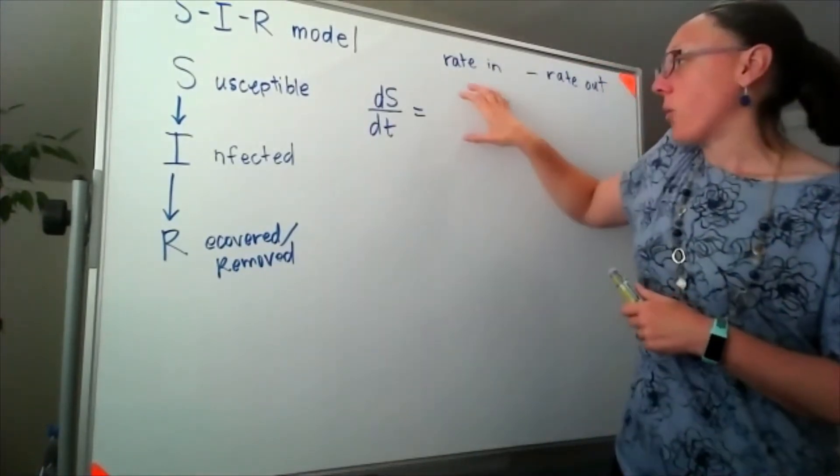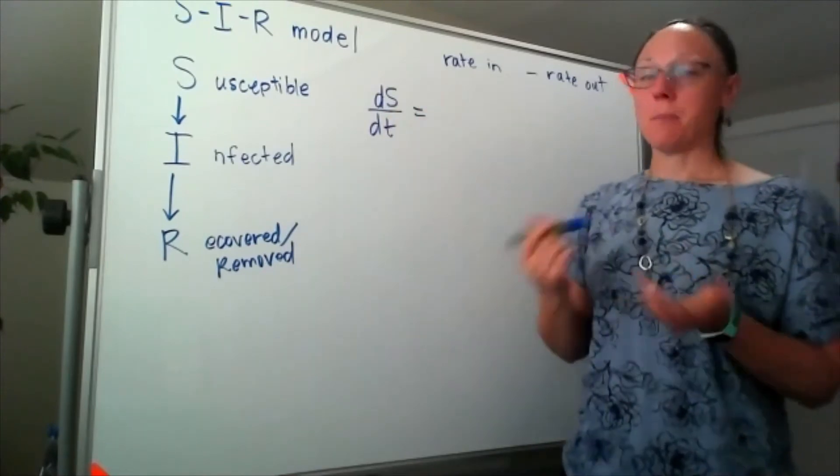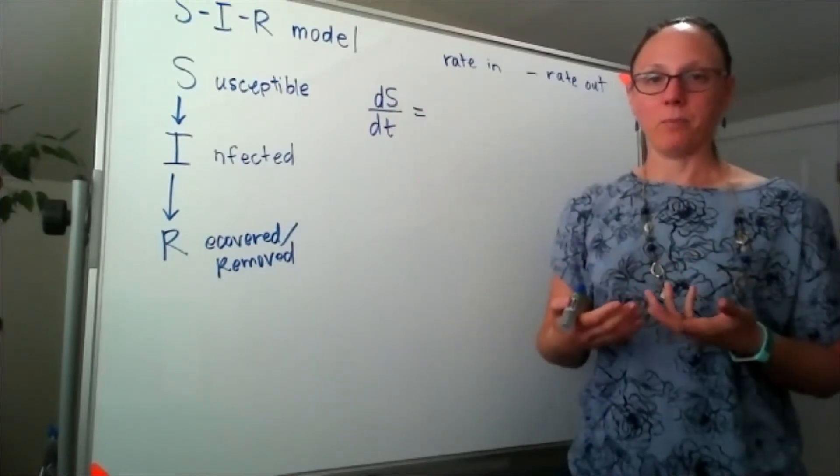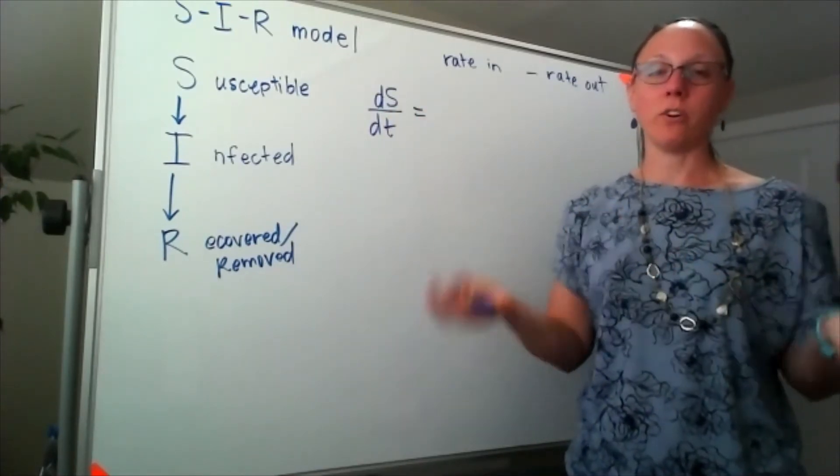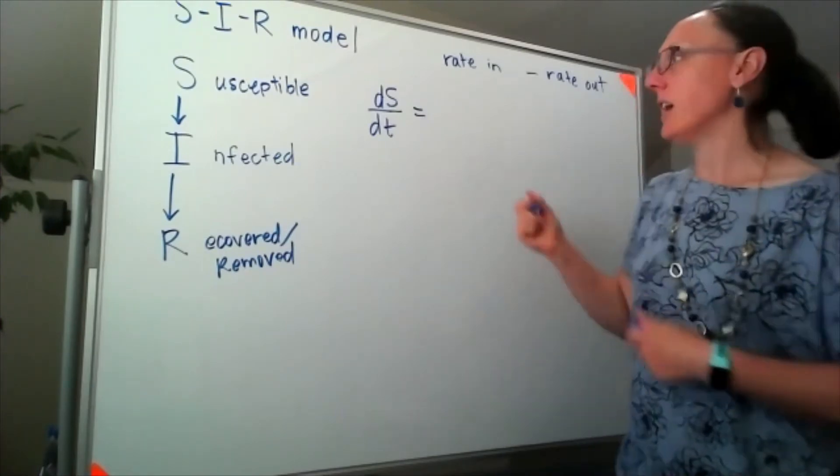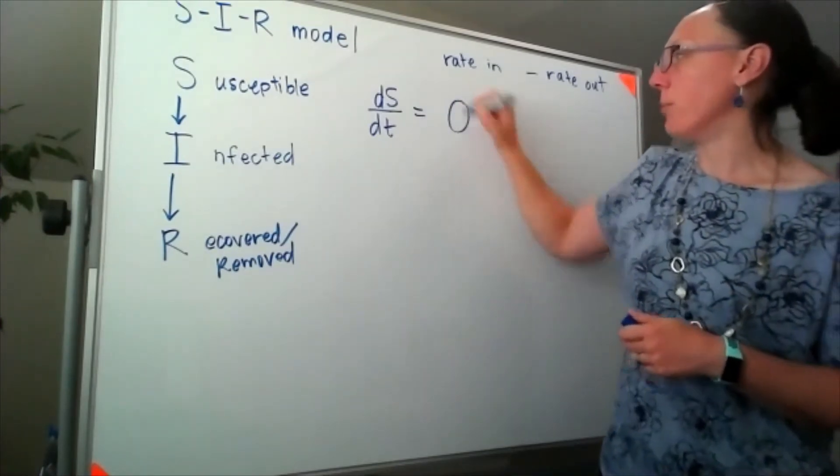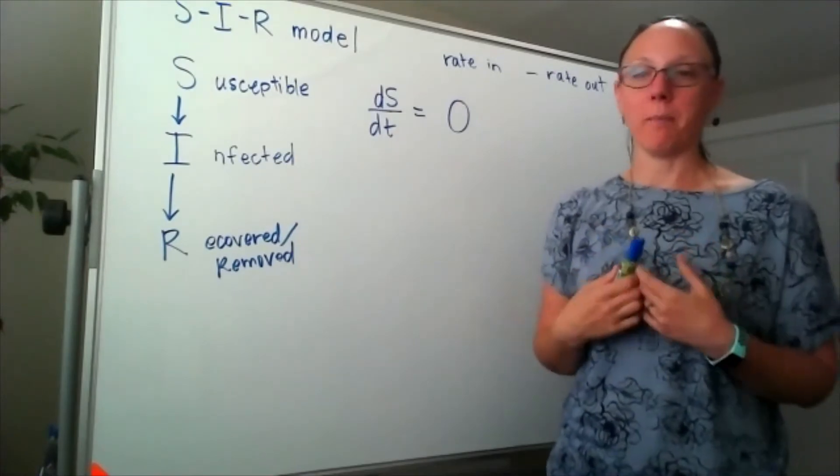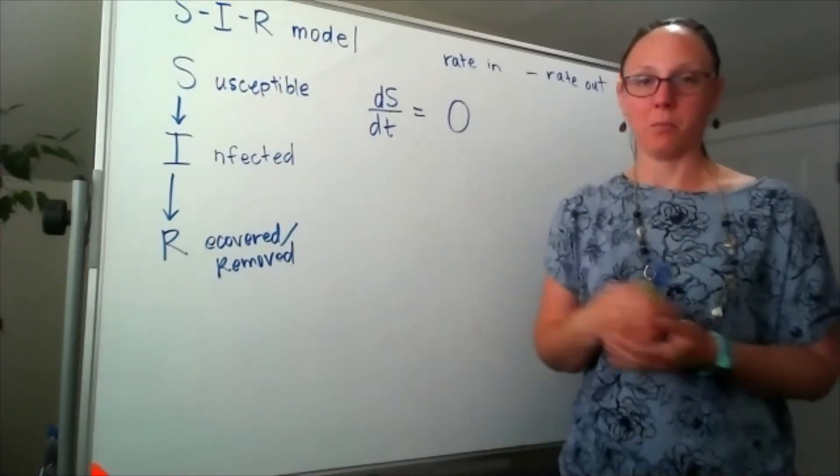When we think about the number of people in the population that are susceptible, if we assume that the total number of people in the population is not changing, then we can't ever get new people in. We won't get more new susceptibles.